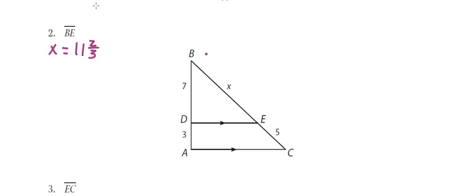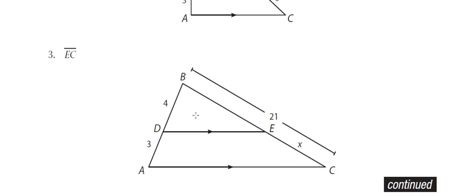Then we went over to number 3, it wants EC — that's also x here. Hopefully you added and you put 3 over 7 is equal to x over 21. That would have given you an x value of 9.